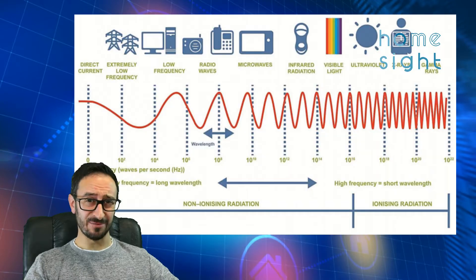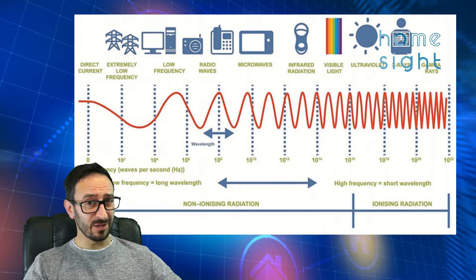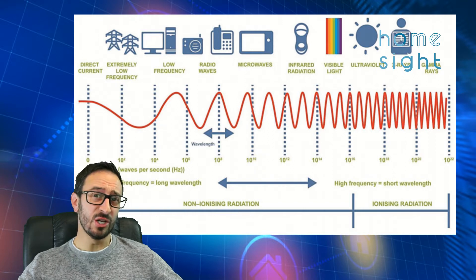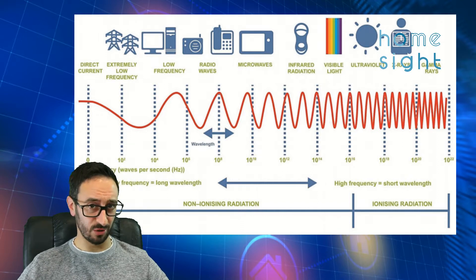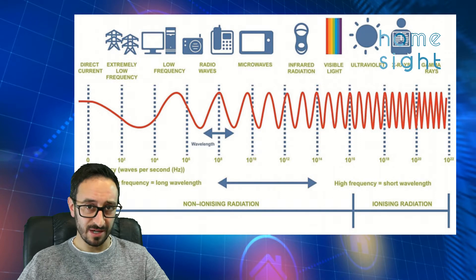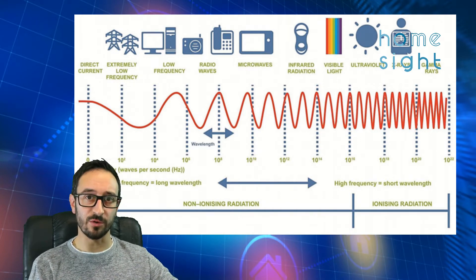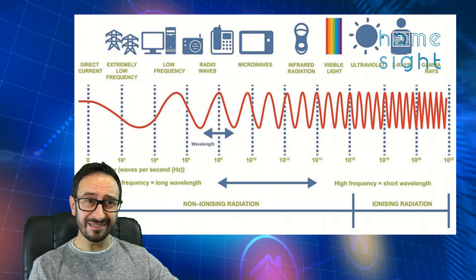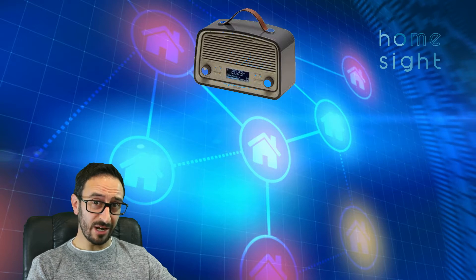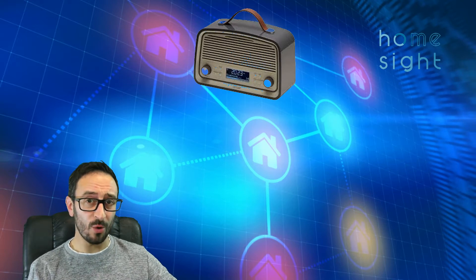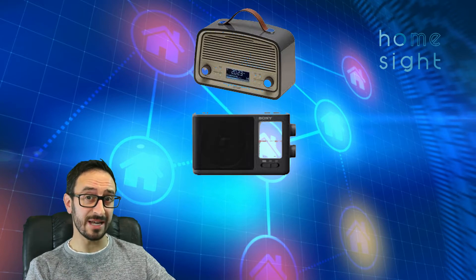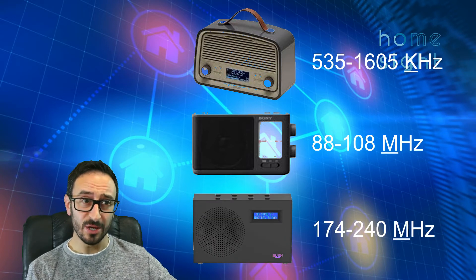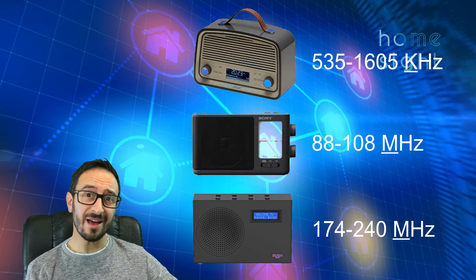RF wireless is an obvious choice for connecting devices to Home Assistant — nice, easy, simple installation. But what is RF? If we take a look at the electromagnetic spectrum, on the very left-hand side we've got really long, slow waves as tall as buildings. On the right-hand side we've got gamma rays as small as atoms. In the middle we've got radio waves — that's what we're talking about. The frequencies get higher and higher, with shorter wavelengths.